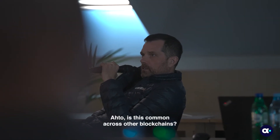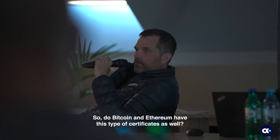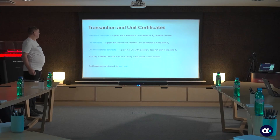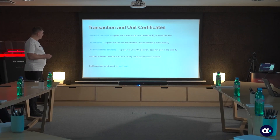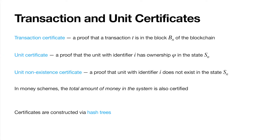These certificate types are not very common in other blockchains. In Bitcoin, we can in principle verify that a certain transaction is in the block — they use a Merkle tree for that — but this only shows the transaction is in the block. It is used in so-called light wallets in Bitcoin. Sometimes we also need a non-existence certificate: a proof that there is no unit with identifier I in state SN, meaning it was either deleted or never occurred in the blockchain.